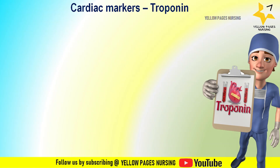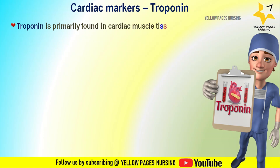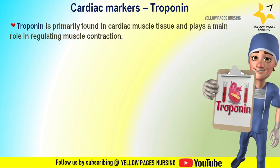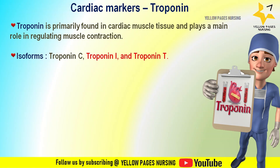Troponin is primarily found in cardiac muscle tissue. It is a complex of proteins involved in the regulation of muscle contraction. In the heart, troponin plays a main role in regulating muscle contraction. The isoforms of troponin refer to different subunits of the troponin complex found in muscle tissue.